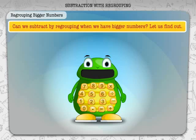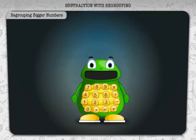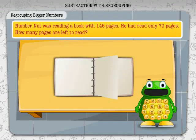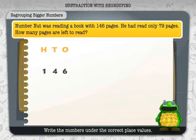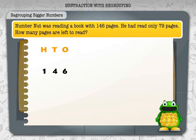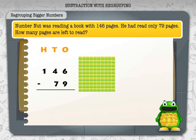Can we subtract by regrouping when we have bigger numbers? Let's find out. Number Nut was reading a book with 146 pages. He had read only 79 pages. How many pages are left to read? Write the numbers under the correct place values. 146 has one hundred, four tens, and six ones.